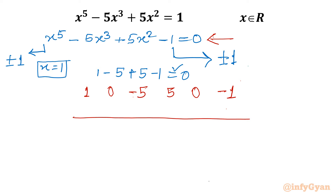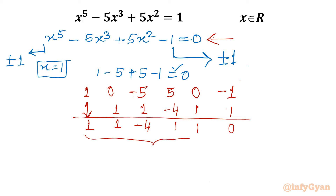Putting one line and using x equals 1, I write the leading coefficient as 1. Performing the synthetic division steps: 1, 1, 1 times 1 gives 1; negative 4; negative 4 times 1 gives negative 4; then 1; 1 times 1 gives 1; and 0 as the remainder. The result is a degree 4 polynomial with coefficients giving x⁴ plus x³ minus 4x² plus x plus 1 equals 0.